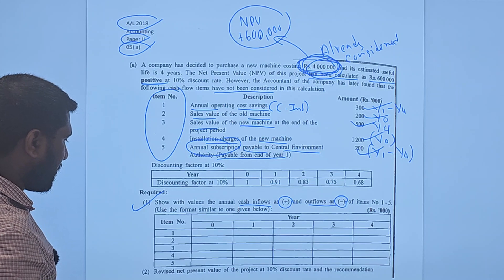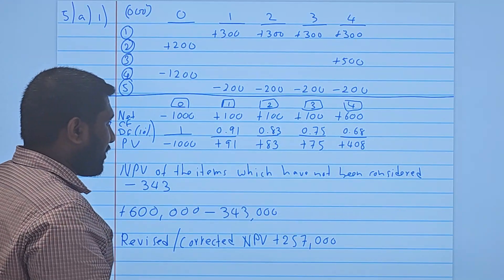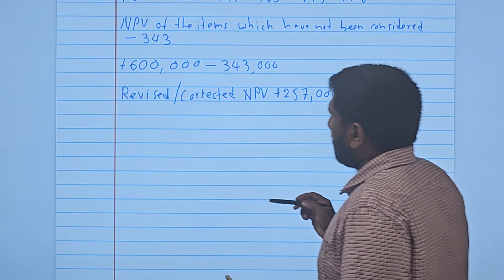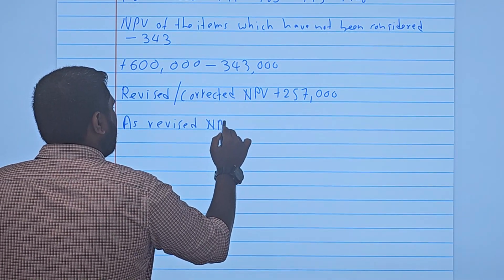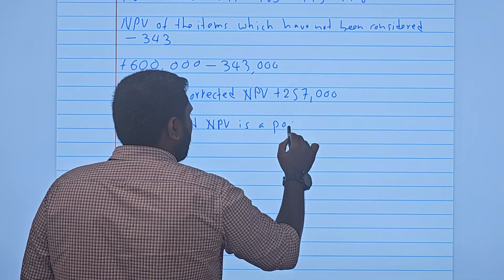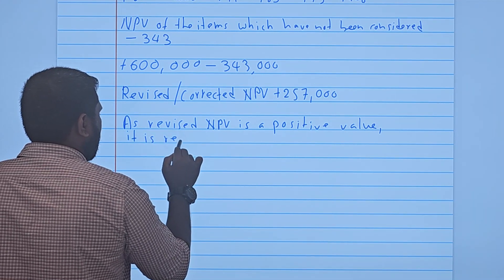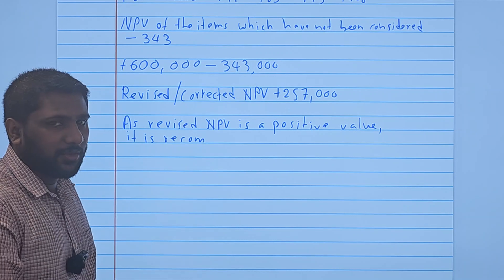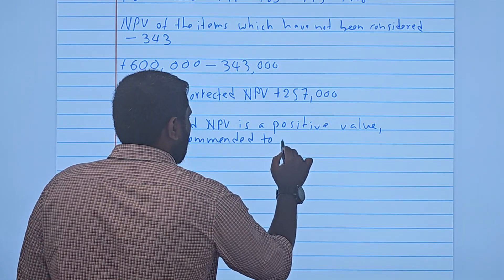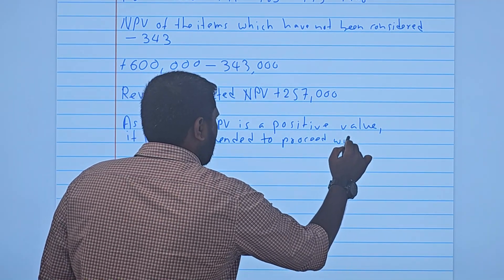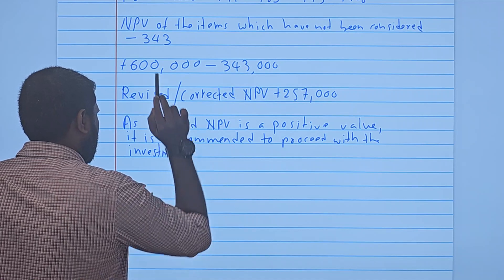They are also asking us to write a recommendation. As the revised NPV is a positive value, it is recommended to proceed with the investment. When NPV is positive you accept the project; when NPV is negative you reject it. So the recommendation here is to proceed with the investment.